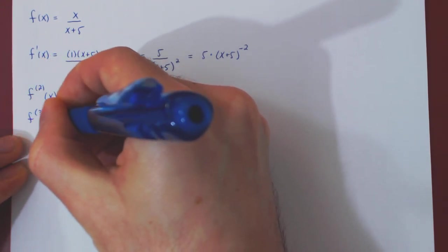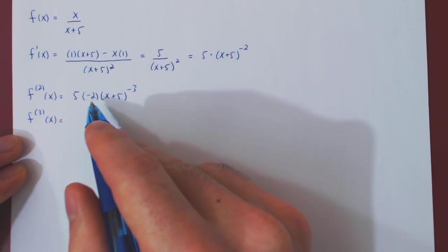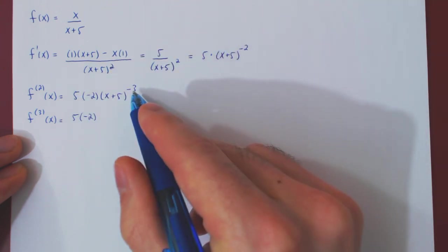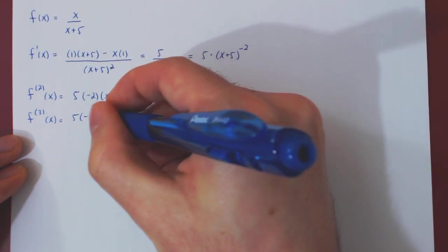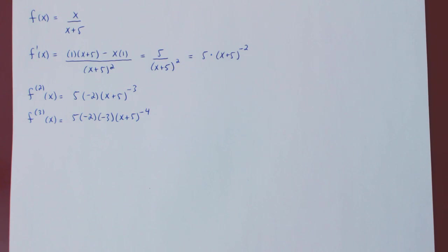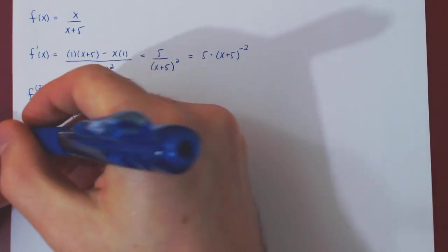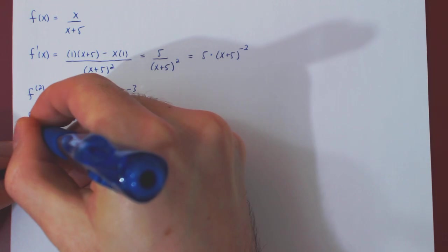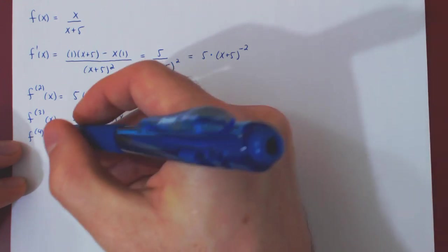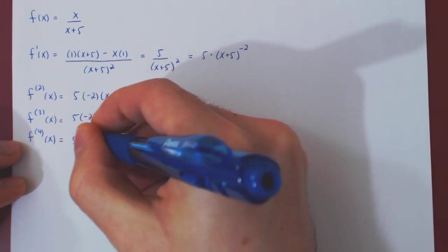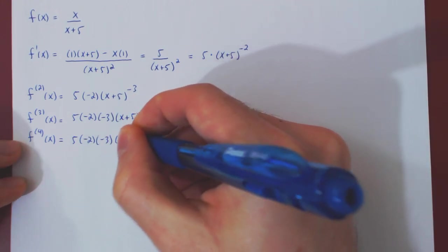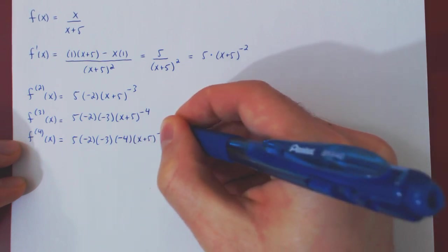The third derivative: 5 times negative 2 is a constant multiple, so it stays there. Power rule gives negative 3, so we have 5 times negative 2 times negative 3, times x plus 5 to the negative 4. The fourth derivative: 5 times negative 2 times negative 3 is the constant multiple, power rule gives negative 4, times x plus 5 to the negative 5.